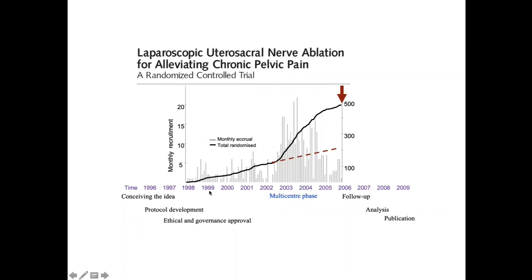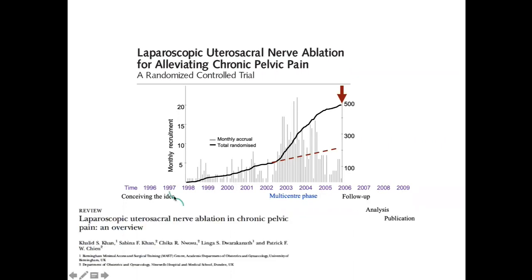Here is a study that commenced with the idea being conceived in 1996. It completed recruitment of the 500 patients required to be randomized in 2006, and was published three years later after follow-up was completed and analysis was carried out. This is not untypical of a large multicenter trial. Ahead of the first patients being recruited into this study, myself and other colleagues who were planning this study had examined all the literature on the subject. Around the same time as we submitted for ethics approval, we also submitted for publication a systematic review, and this was published in due course.